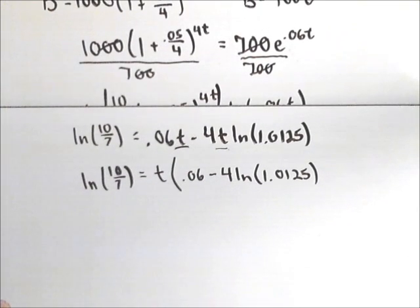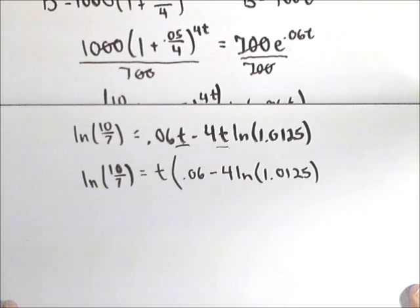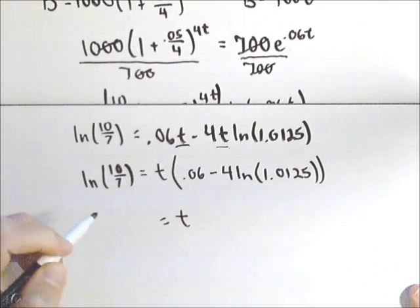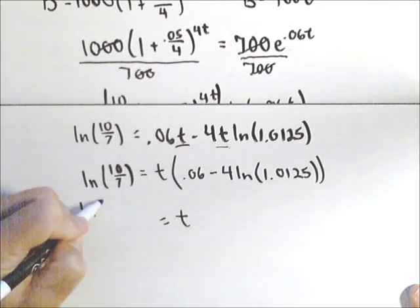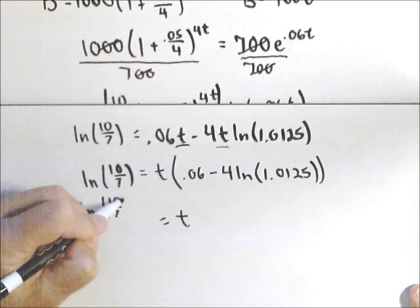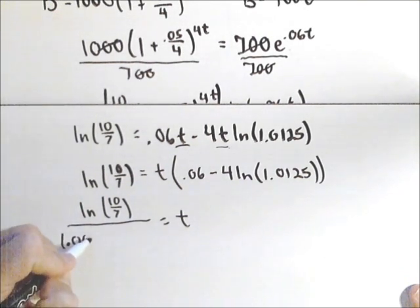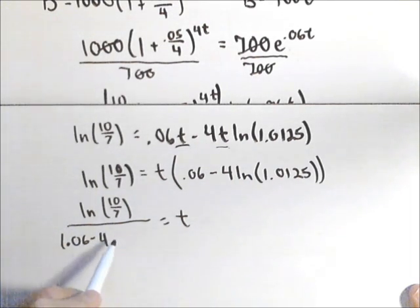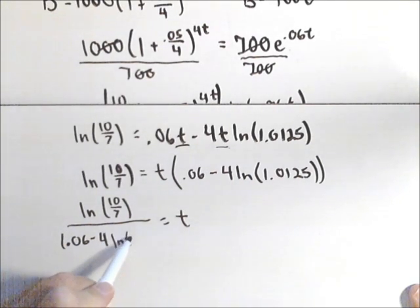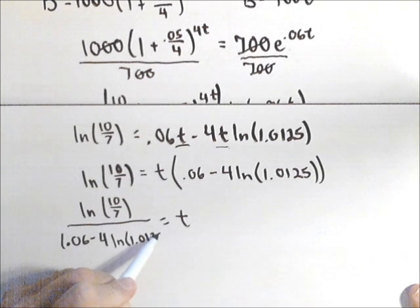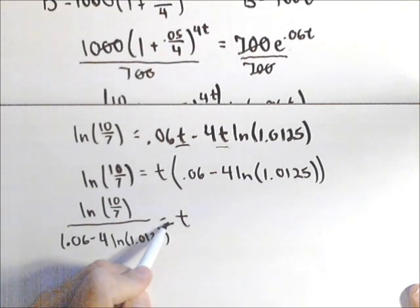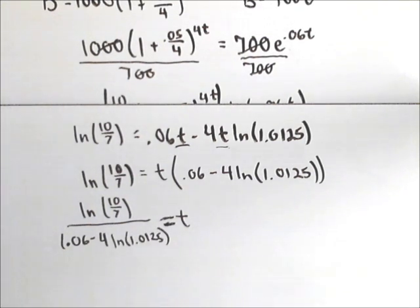So to finish solving for t all I need to do is divide. I'm missing a parenthesis there. So t is equal to natural log of 10 over 7 all over .06 minus 4 ln of 1.0125. And notice I can actually use a straight equals because this is the exact answer.